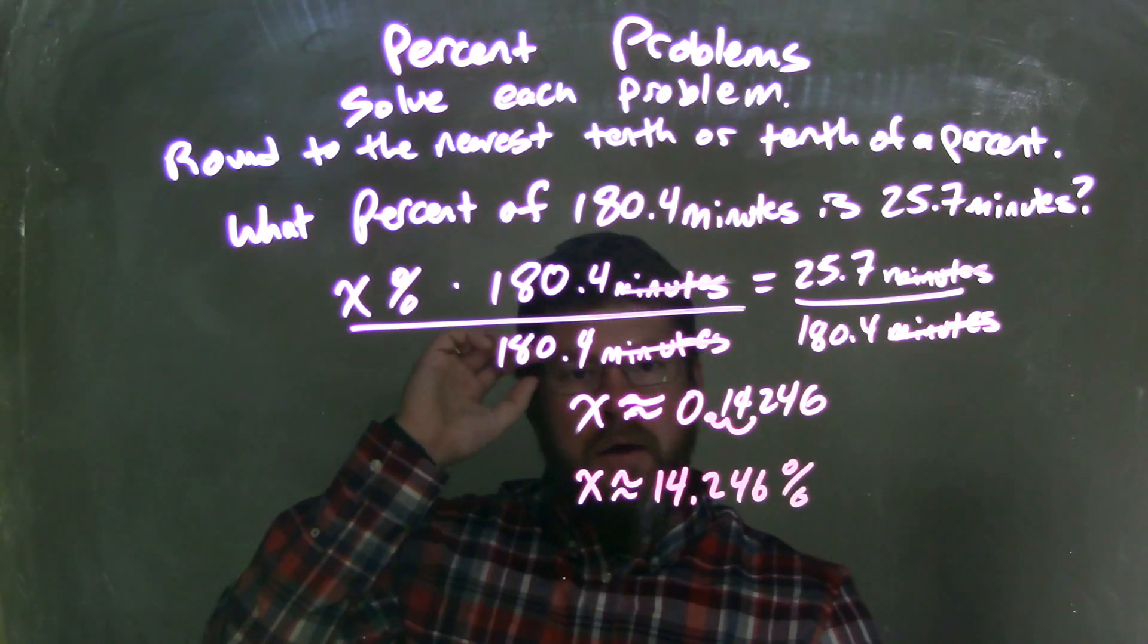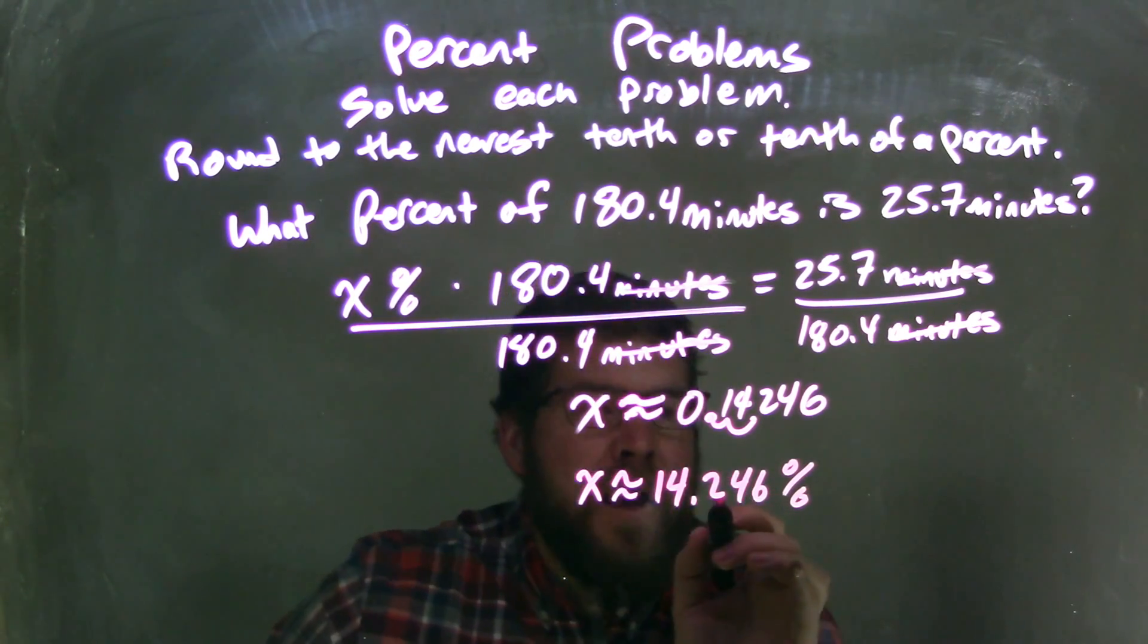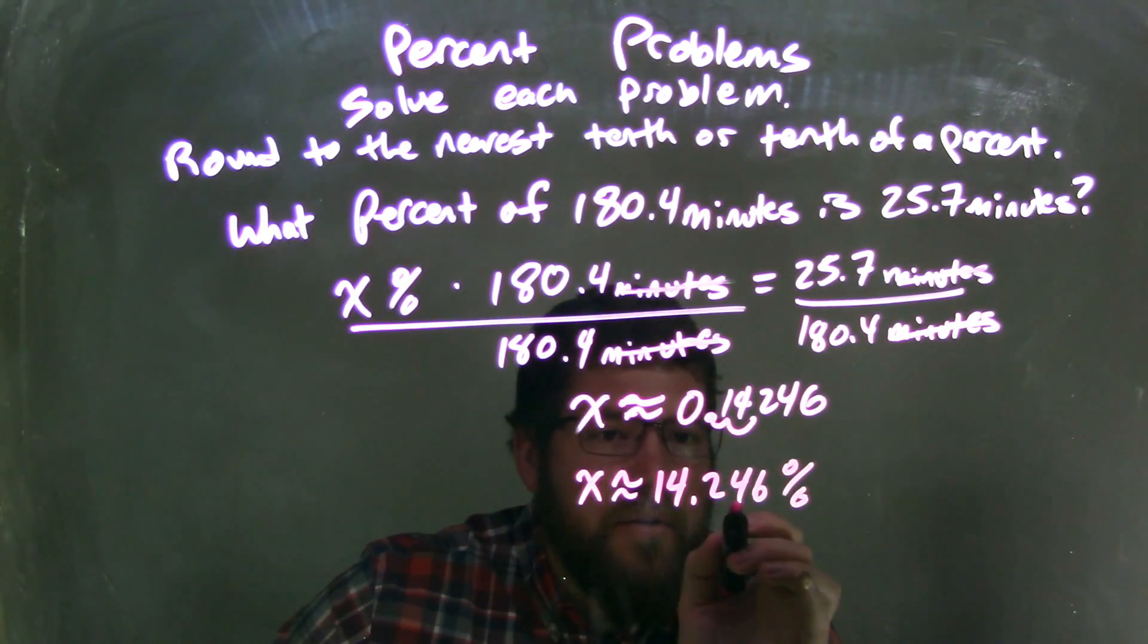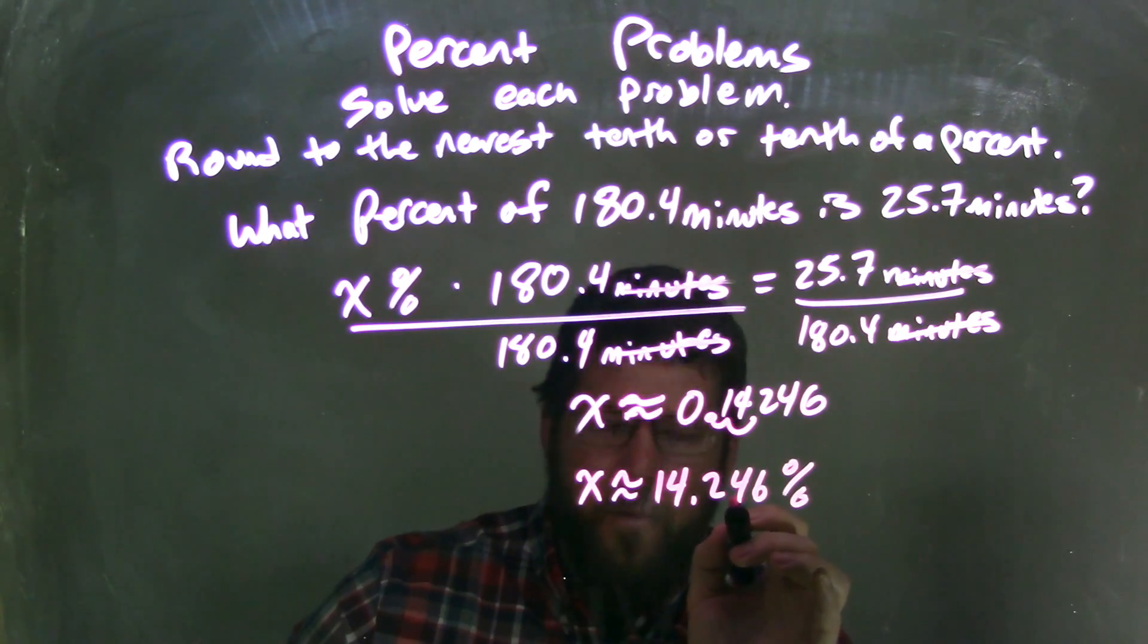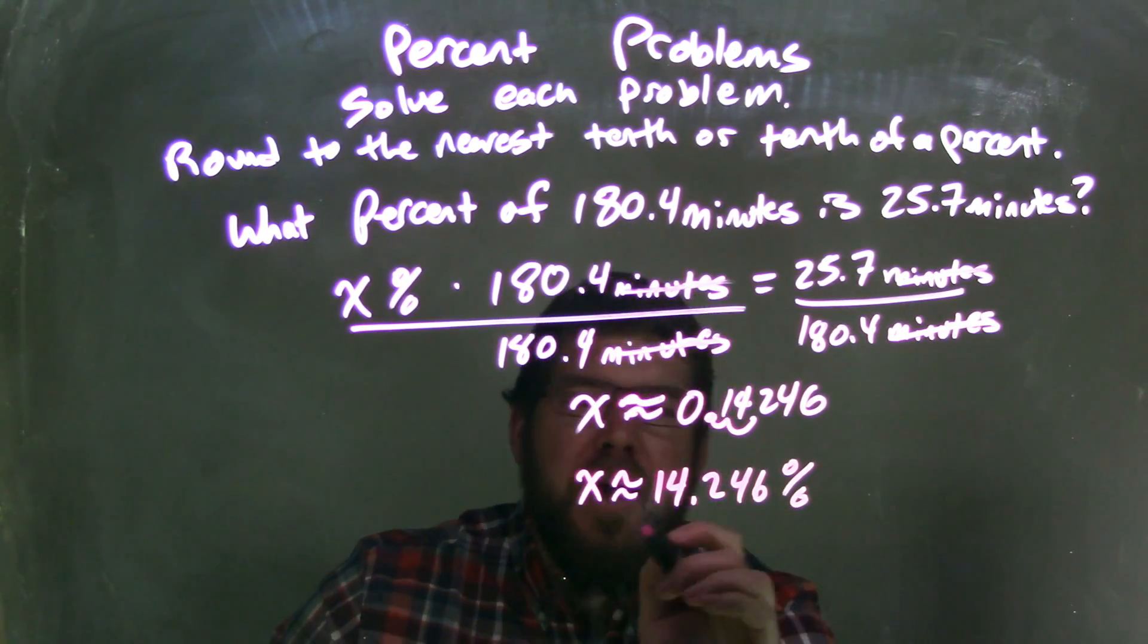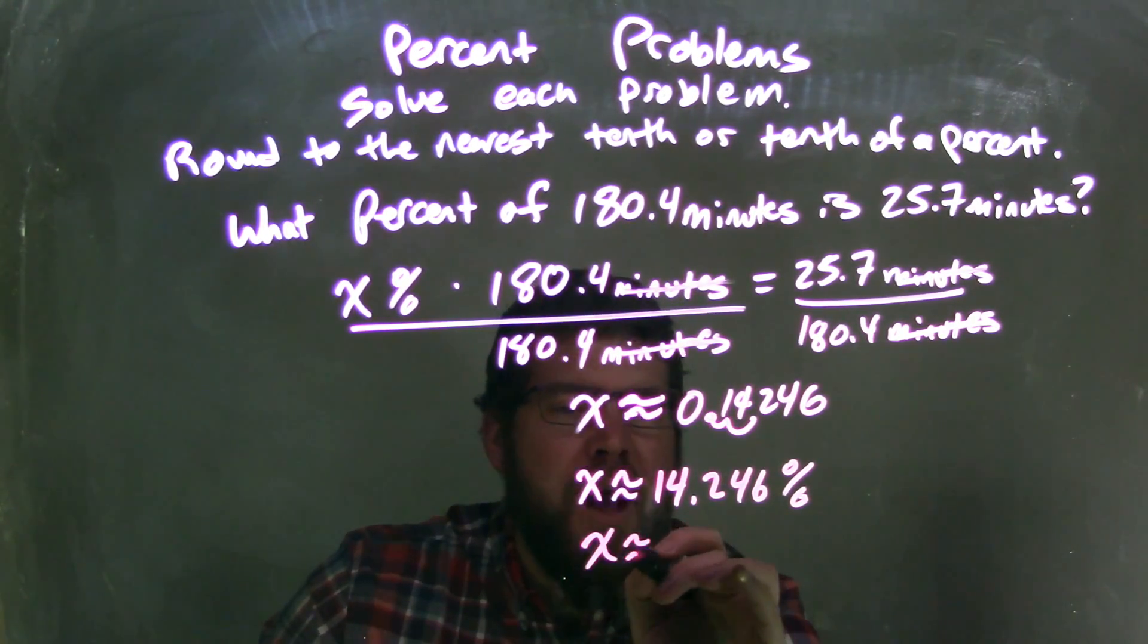Then from there, I need to round to the nearest tenth. So look at the two and the four. The four causes the two to stay where it is, doesn't change. And so my final answer is x is approximately 14.2%.